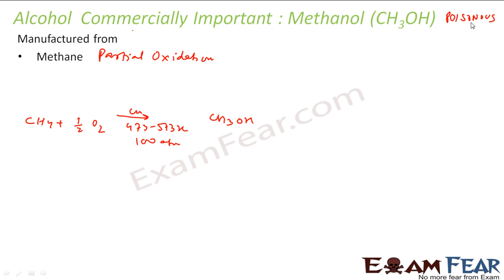So, you take methane, do the partial oxidation of methane in the presence of a copper catalyst at 473 to 573 Kelvin, and at atmospheric pressure, you get methanol.